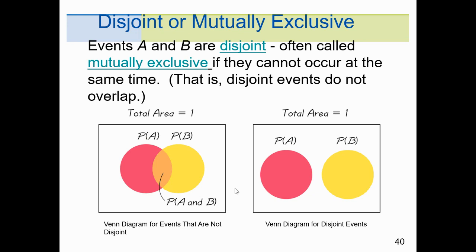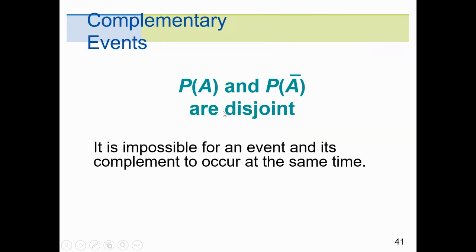Venn diagrams illustrate this. One diagram shows events that are mutually exclusive — no common events, no overlap. Another shows events with an overlap, meaning they are not mutually exclusive and not disjoint. Also, the probability of event A and the complement of A: they can't happen at the same time — it's impossible for an event and its complement to occur simultaneously.